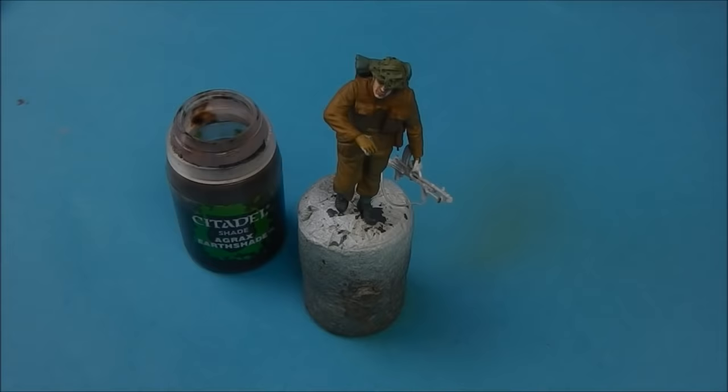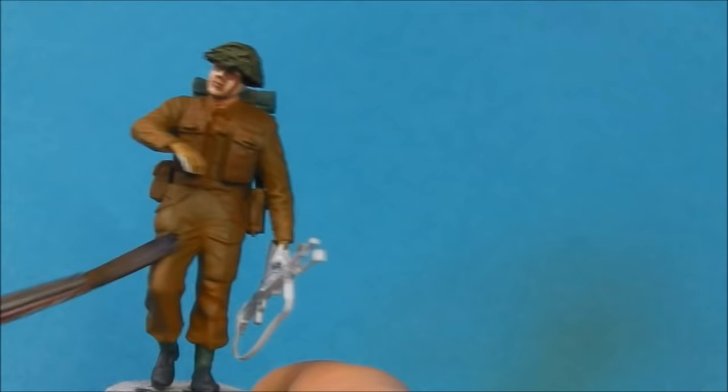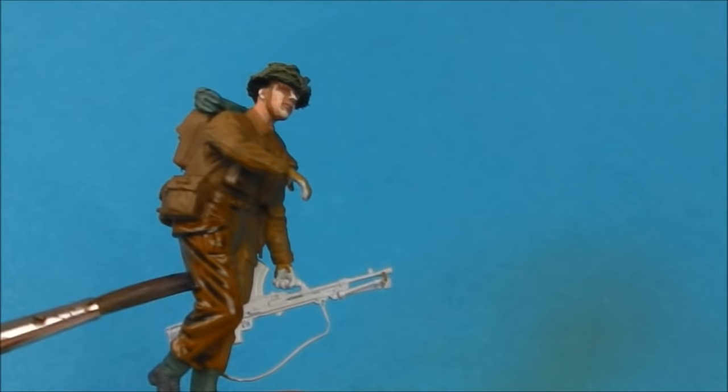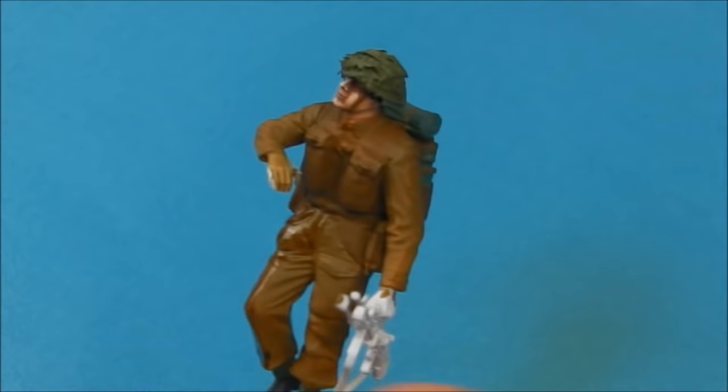When all this is allowed to dry, we're going to start adding our wash layers. For this we're going to use Citadel's Agrax Earthshade. I'm going to apply this all over the entire model. I'm going to be careful not to allow this to pool in any areas. I don't want to do that. So you'll see me go back and blend it with my brush if I feel there's just too much of it building up.